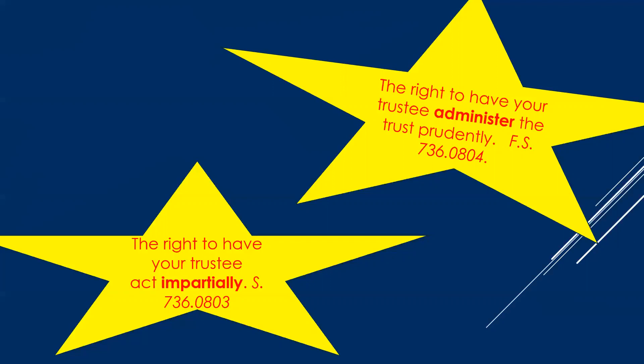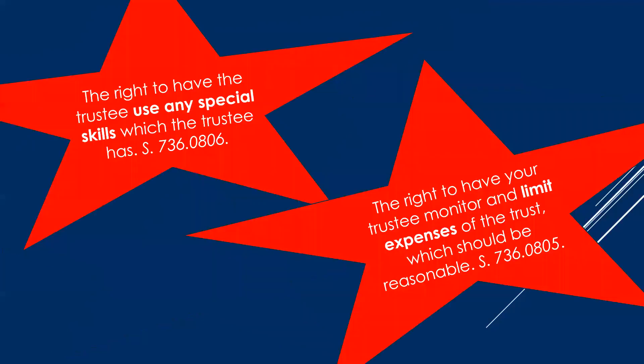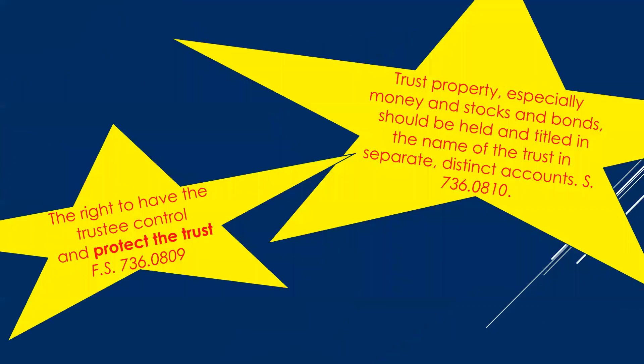You have a right to have your trustee act impartially and administer the trust prudently. Trustees must use any special skills they possess — attorneys, accountants, or finance professionals have a higher duty to apply those skills. Beneficiaries have a right to have the trustee monitor and limit expenses of the trust, and those expenses need to be reasonable. Trustees must control and protect trust property: take reasonable steps to protect it. Margin — not a good idea. Gambling — not a good idea. Stock concentrations — not a good idea.